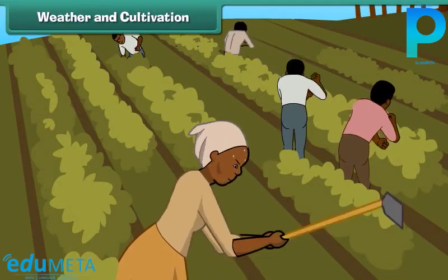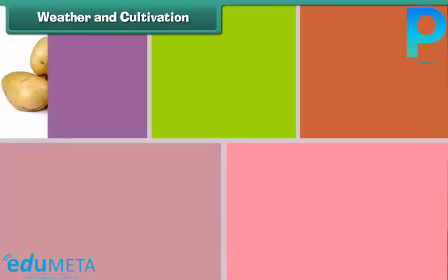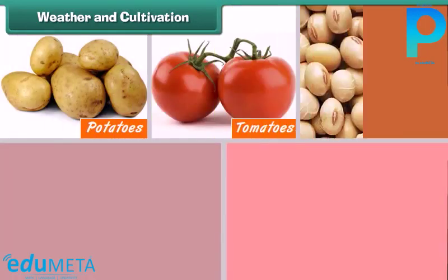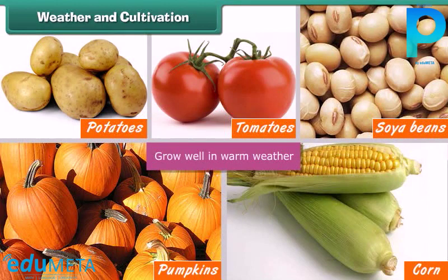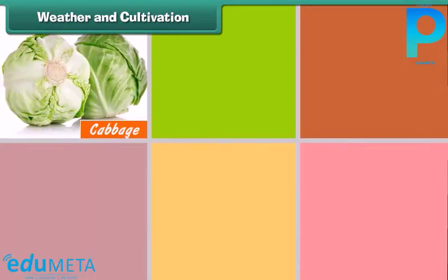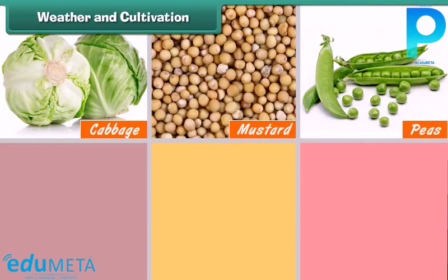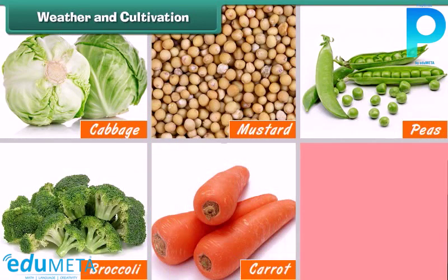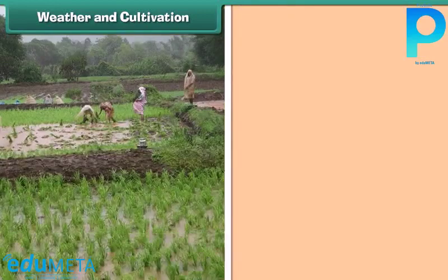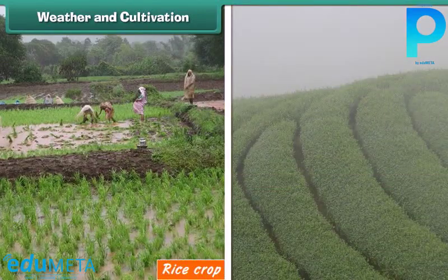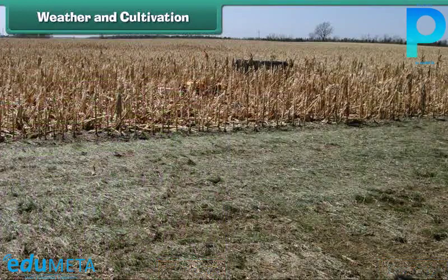Weather affects cultivation. Some crops like potatoes, tomatoes, soybeans, pumpkins, and corn grow well in warm weather. Cabbage, mustard, peas, broccoli, carrot, and radish grow well in cold weather conditions. Rainfall is good for rice and tea crops, but too little or too much rain can destroy crops.